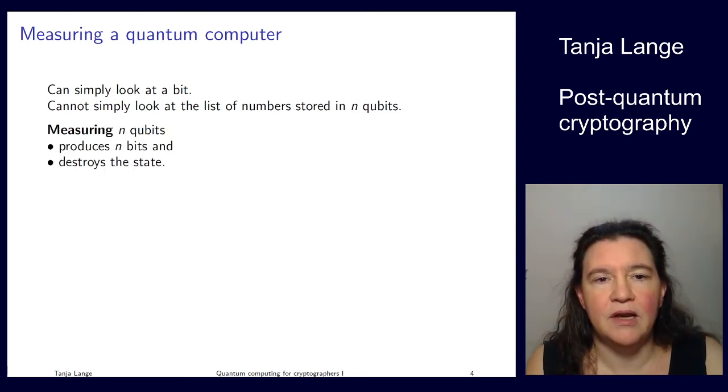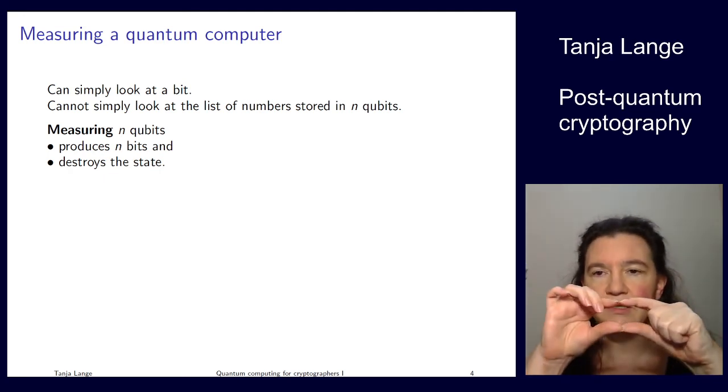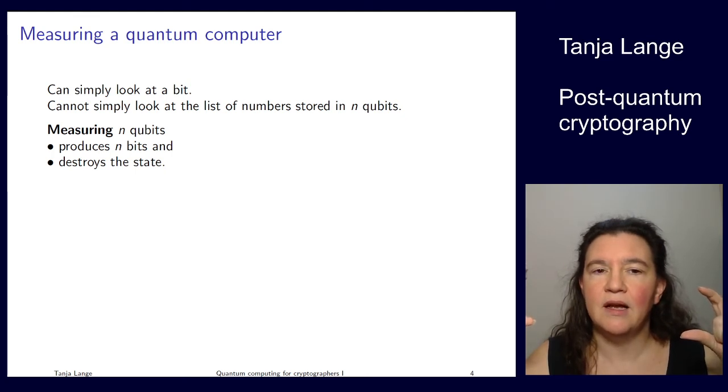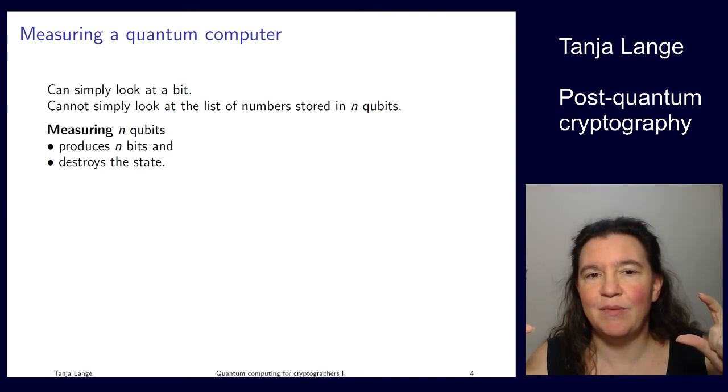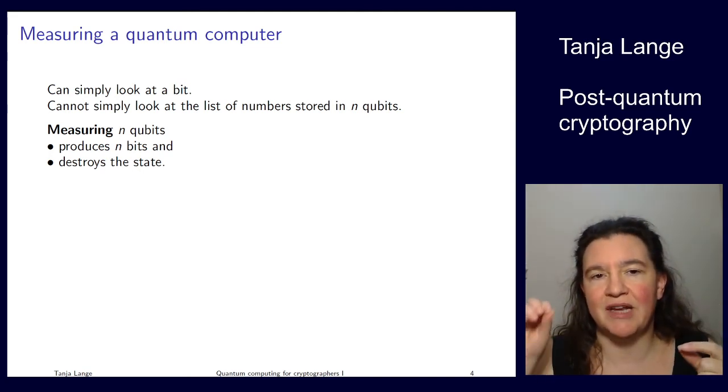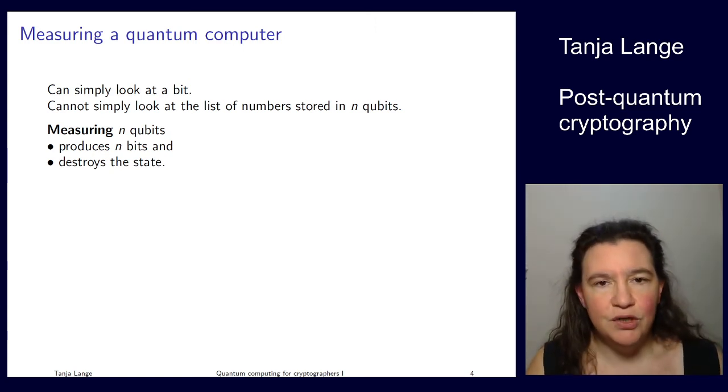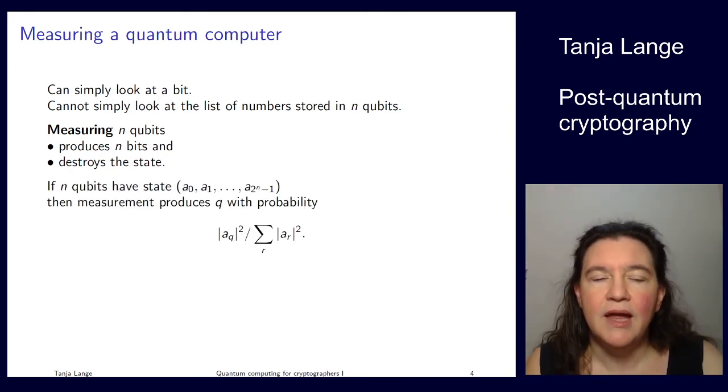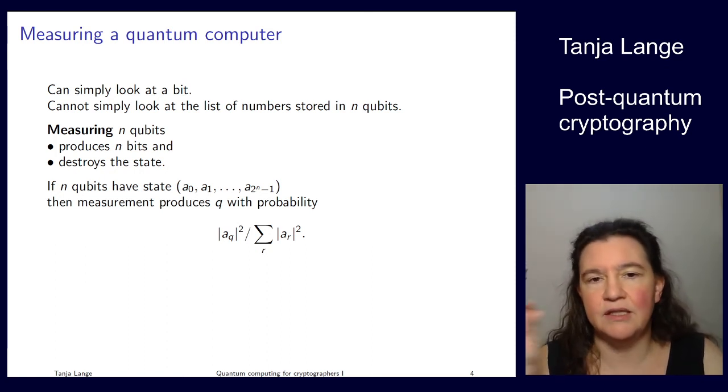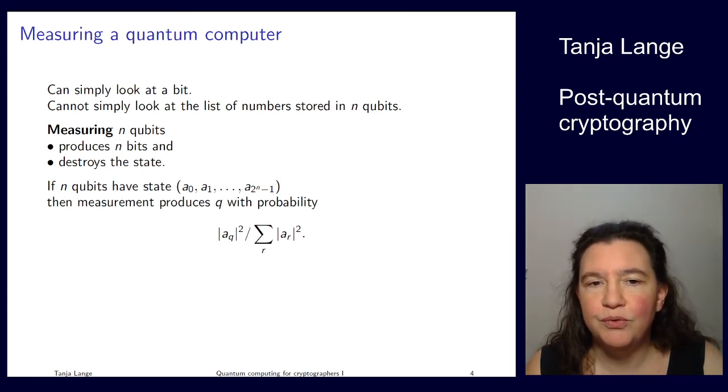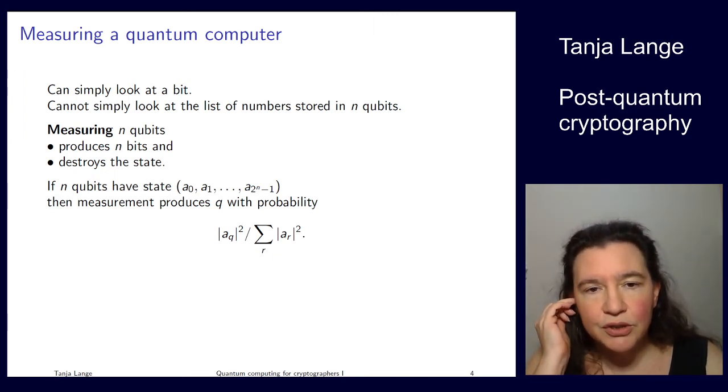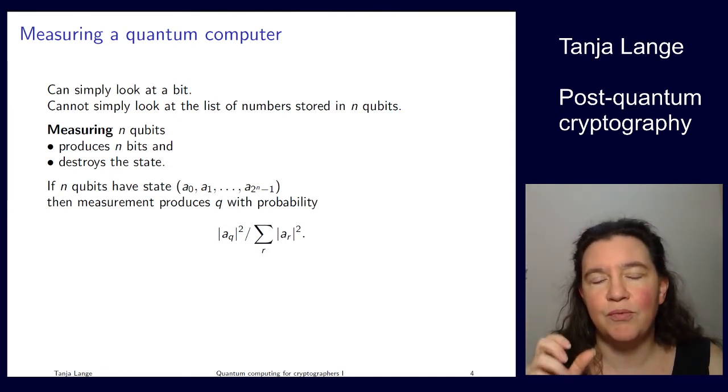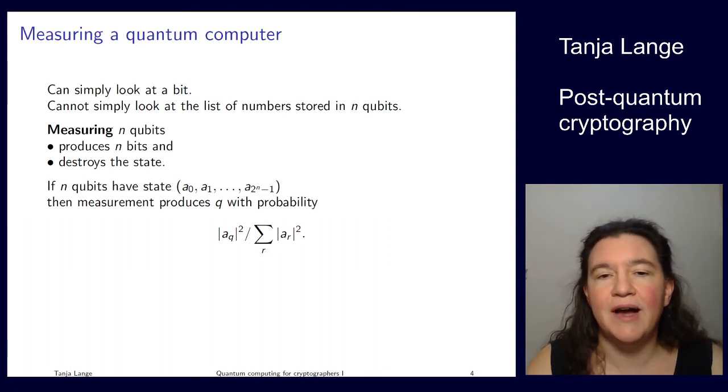If I want to measure n qubits, then I obtain n bits. So if I think of these 4 qubits, the list of lengths 16, then I get a number between 0 and 15. And if I do that, it destroys the contents of these qubits. It changes it. So I can measure or I can continue the computation, but I cannot measure and then say, oh, where was I?